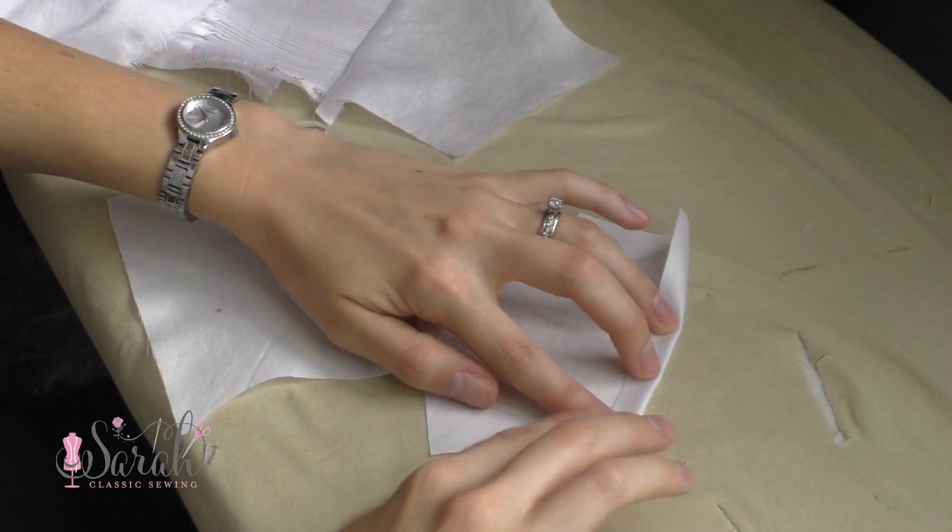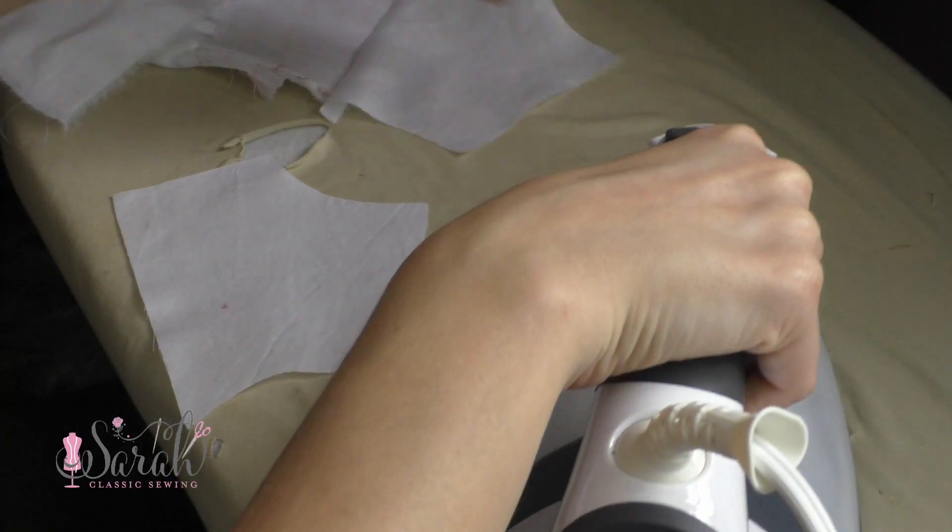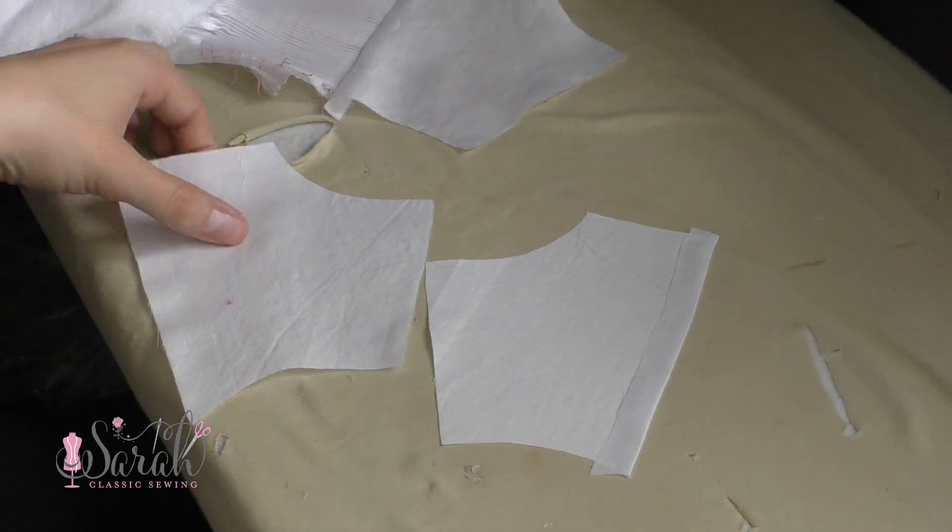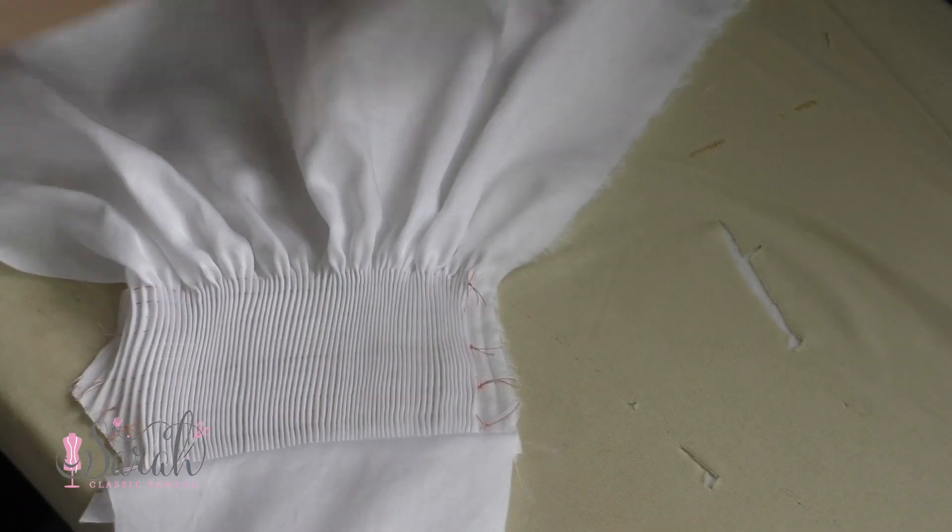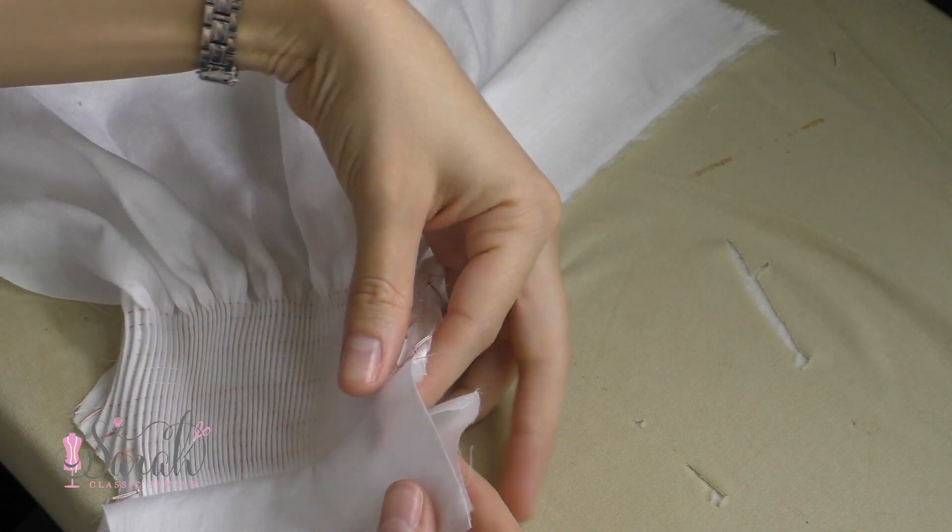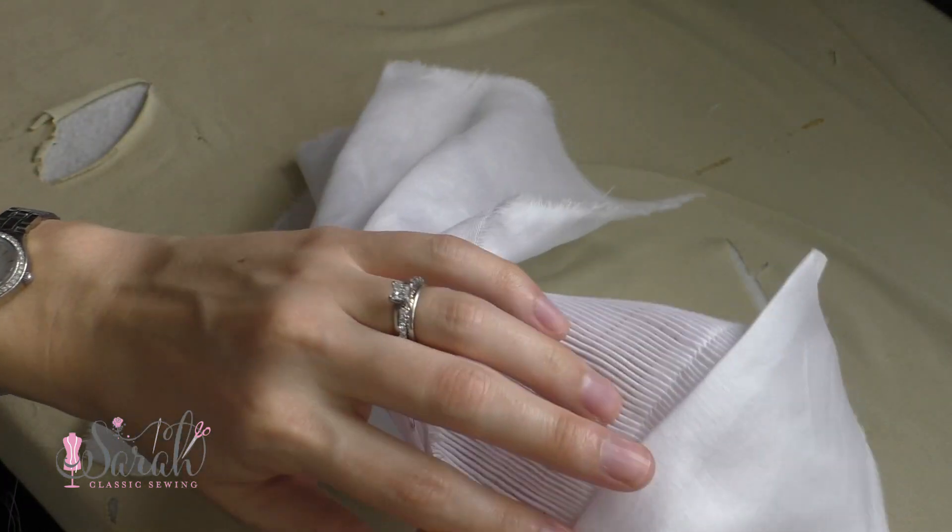Before joining the lining to the yoke of the garment, I turn the bottom edge and iron that in place. Then I put the wrong sides together with the garment and sew around the neckline and armhole area just basting the two together.